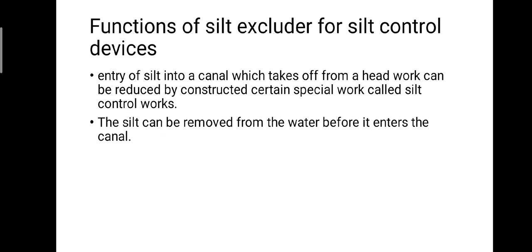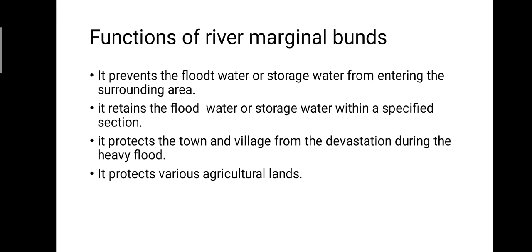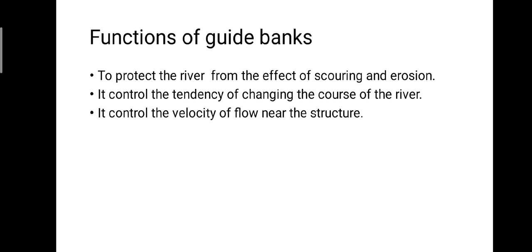The next component is river training works, which mainly include marginal bunds and guide banks. Marginal bunds are constructed to prevent flood or storage water from entering the surrounding area, to retain flood water within a specified section, to protect towns and villages from devastation during heavy floods, and to protect valuable agricultural lands. The functions of guide banks are to protect the river from the effects of scouring and erosion, to control the tendency of the river changing its course, and to control the velocity of flow near the river.